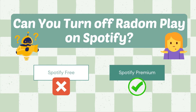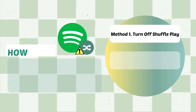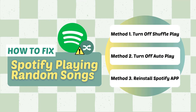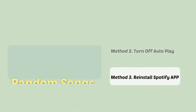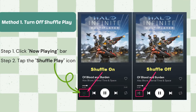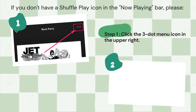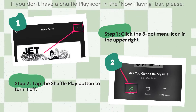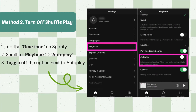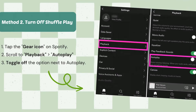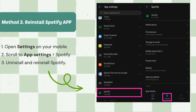Now let's move on to our main topic. We've got three methods for you today. Method one: turn off shuffle play. Method two: turn off autoplay. And if all else fails, try our third method: reinstall the Spotify app.